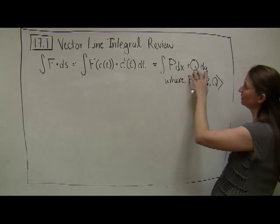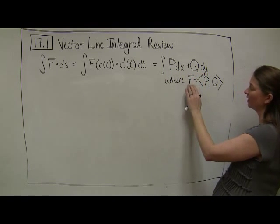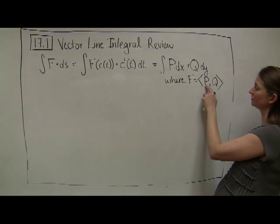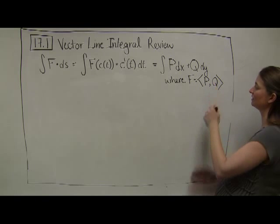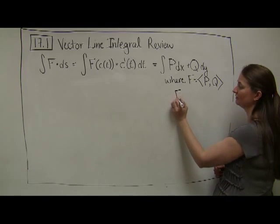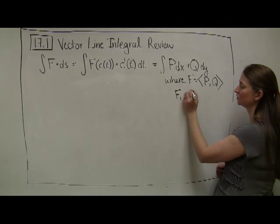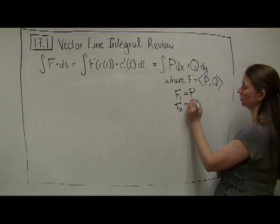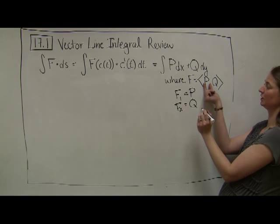Previously we defined these as f1 and f2, so f1 equals P and f2 equals Q. The first function part is our P part.